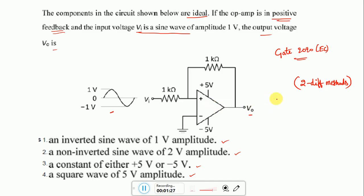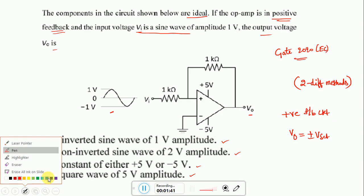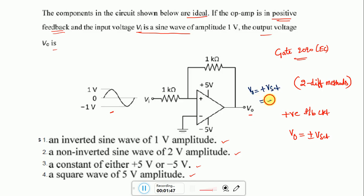As this is a positive feedback circuit, the output will be assumed initially as plus or minus Vsat. Now for time being let me assume that as V0 equal to plus Vsat, that is plus 5V.